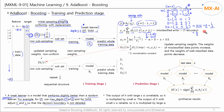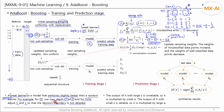Next, we calculate the alpha value in the first iteration round. The formula for alpha is derived from the exponential loss, but for now let's just use it. Alpha is assumed to be a positive value. For this to happen, epsilon must be less than 0.5. Random predictions result in an epsilon of approximately 0.5, while weak learners perform slightly better, so their epsilon will be less than 0.5.